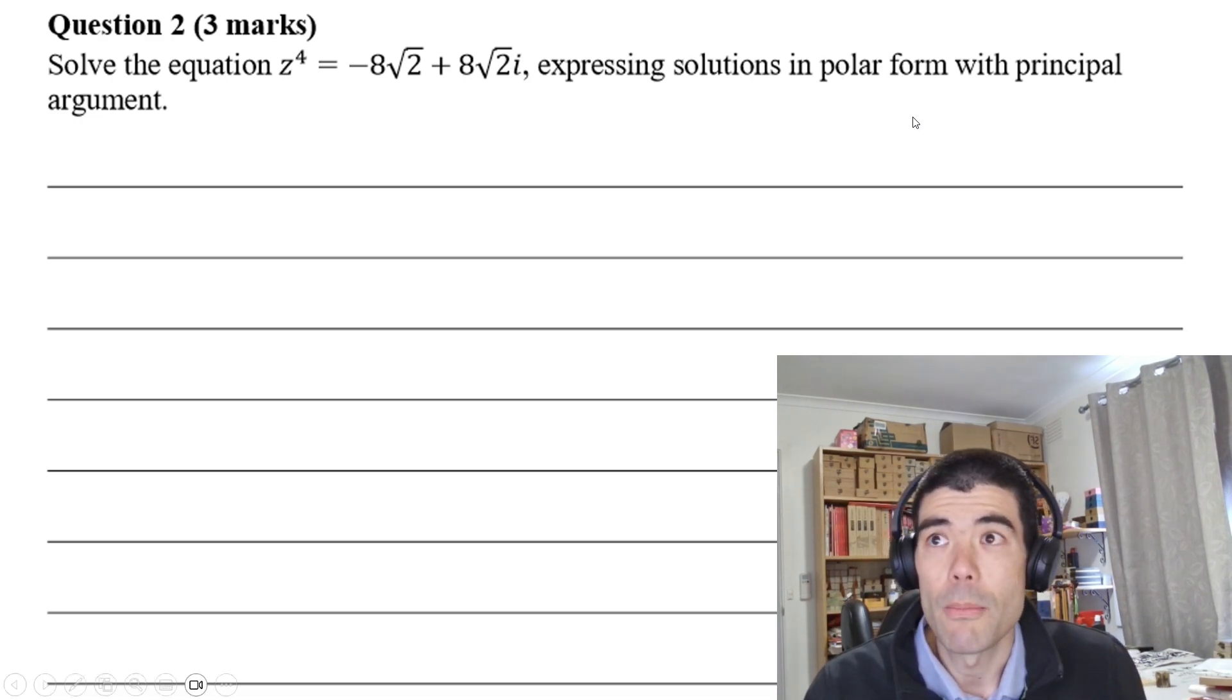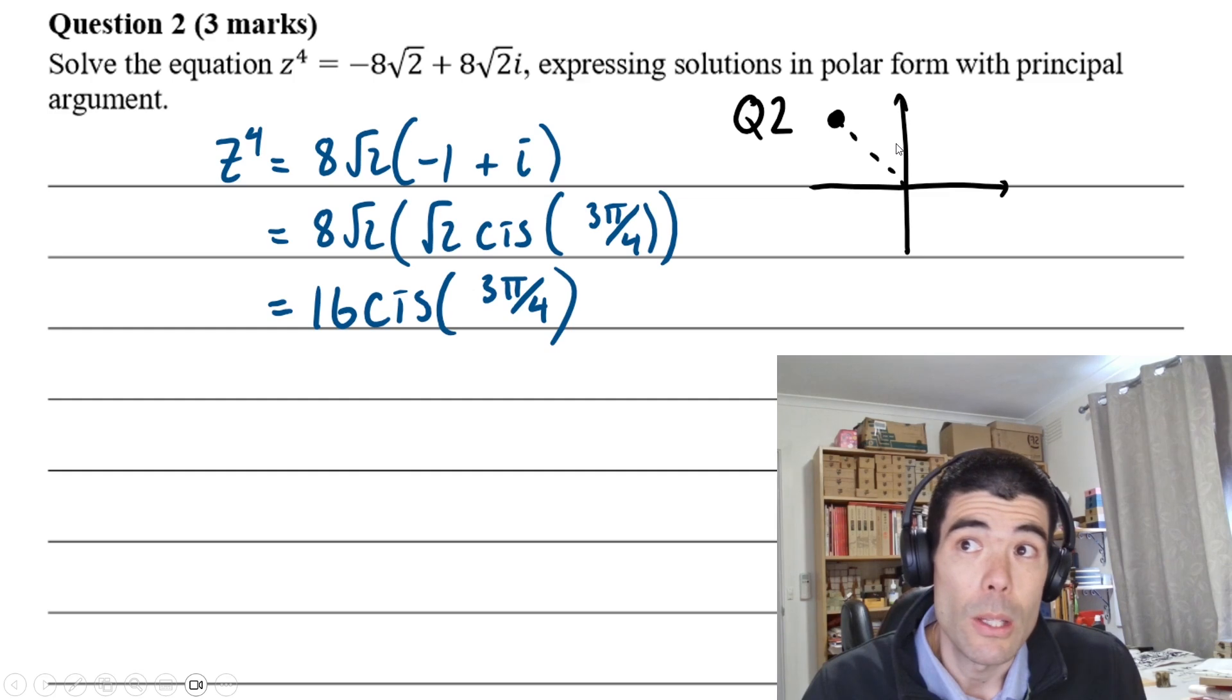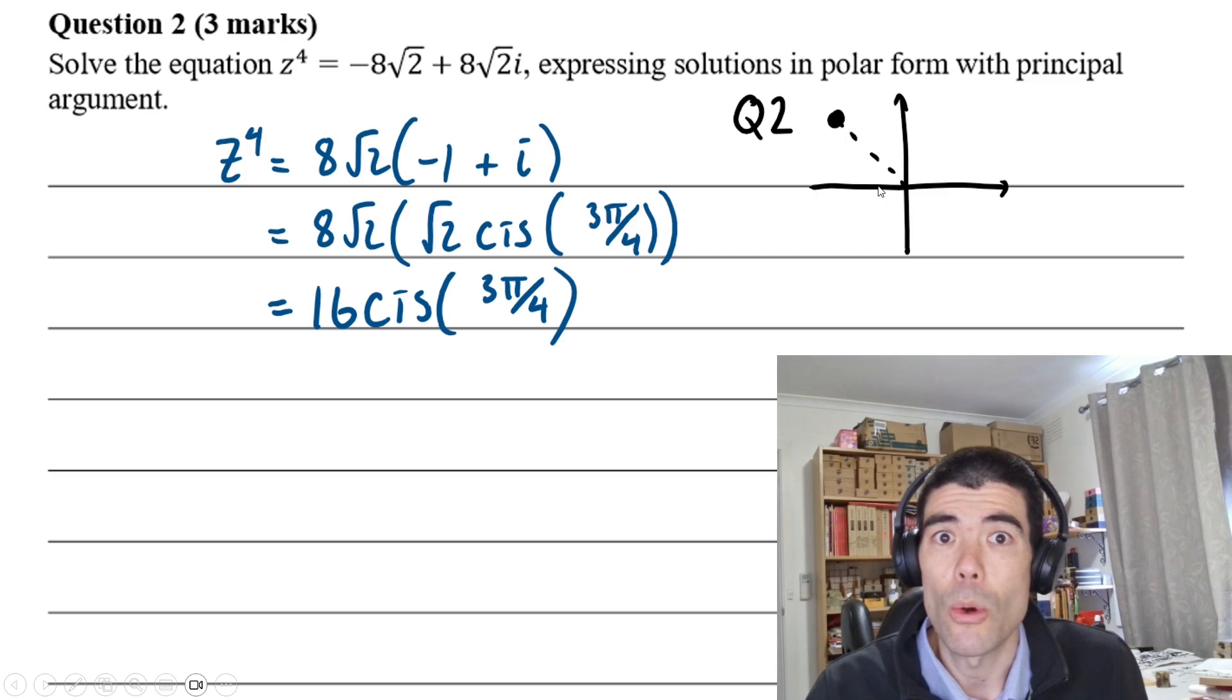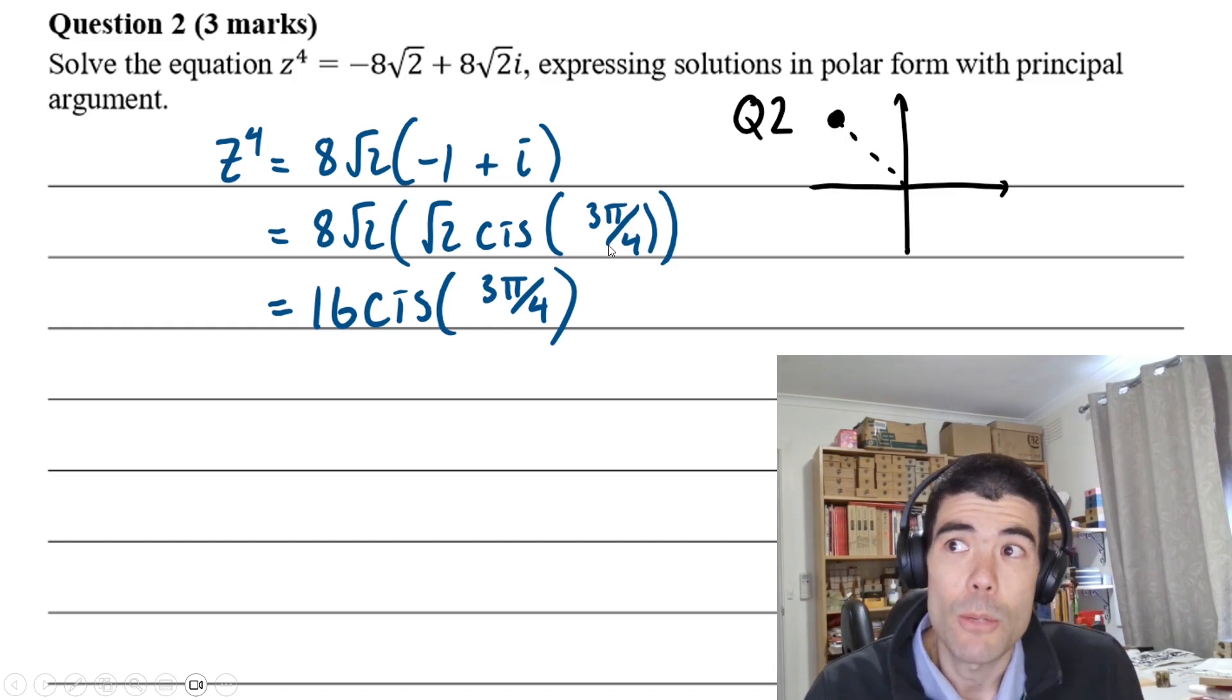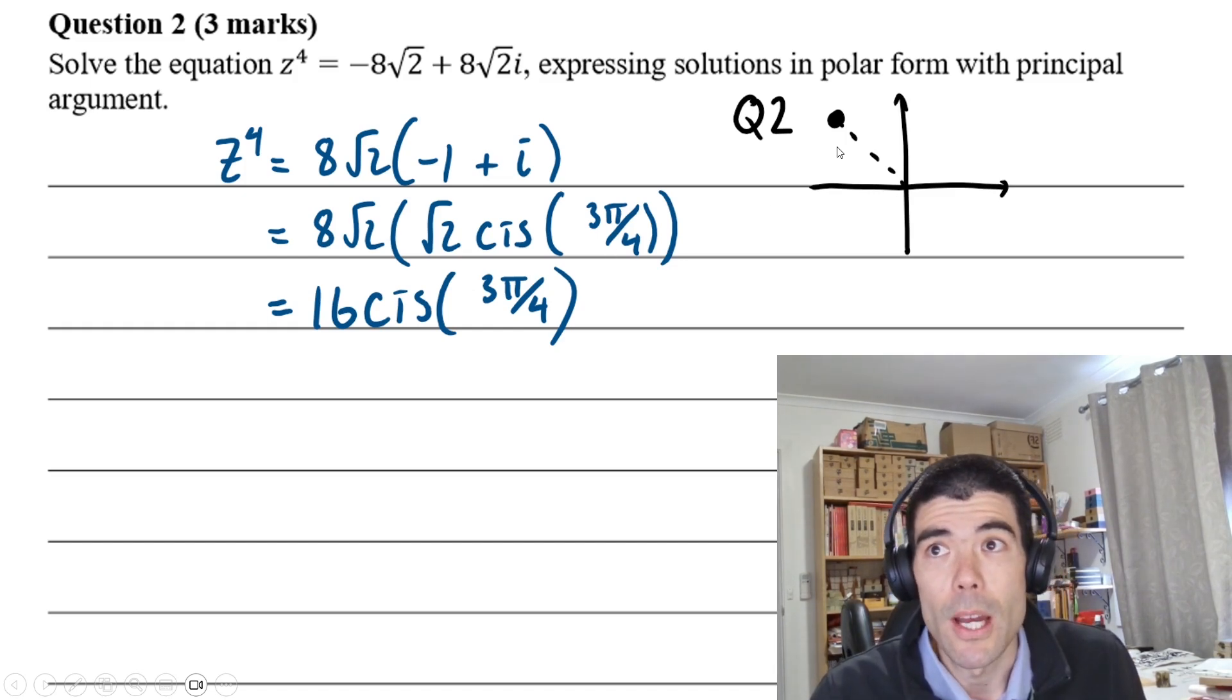The first step would be to rewrite our complex number in polar form. Draw a little diagram. Real part is negative 8 root 2, imaginary part is 8 root 2, so this is in quadrant 2. If we take out a common factor of 8 root 2, we get negative 1 plus i. We can work out that negative 1 plus i has a length of root 2 and an angle of 3π/4. It is in quadrant 2. A common mistake is to use inverse tan and get negative π/4 and put this in the fourth quadrant. That's why I recommend you always draw a diagram.